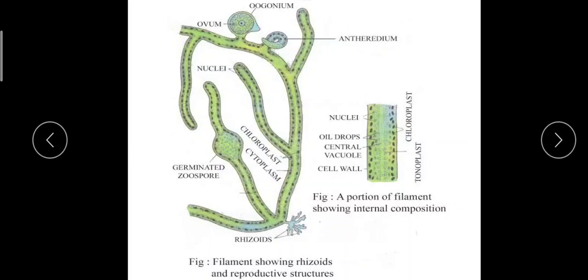Vaucheria attaches to the substrate by means of rhizoid-like structures called haptera. In some cases the surface of the filament may be impregnated with calcium carbonates. The filament has a thin wall with two layers: an inner layer made up of cellulose and an outer layer made up of pectic substances.